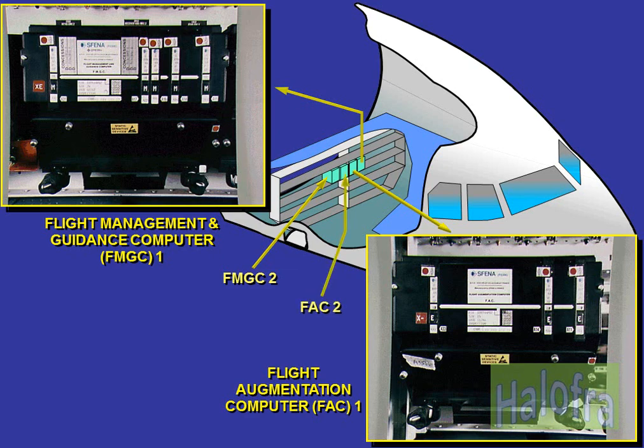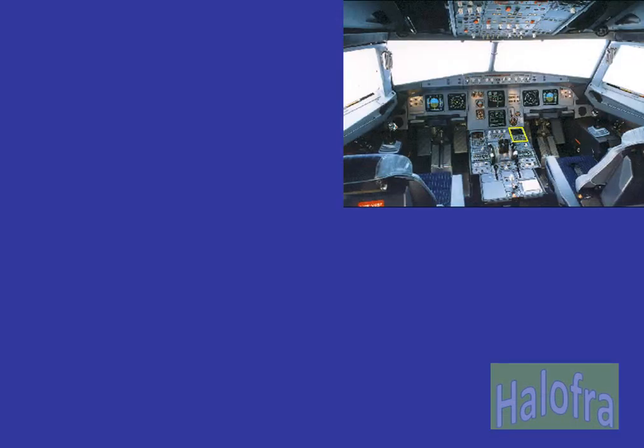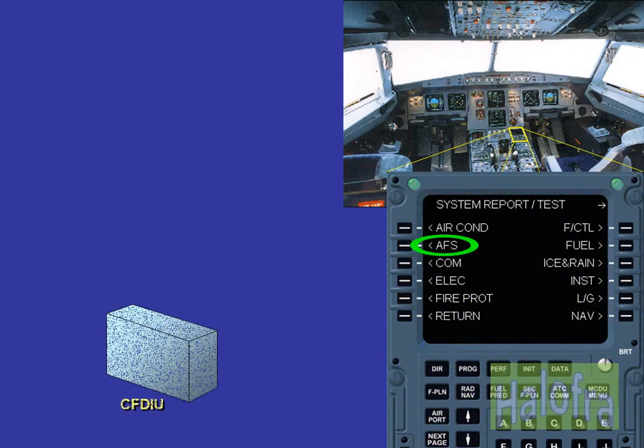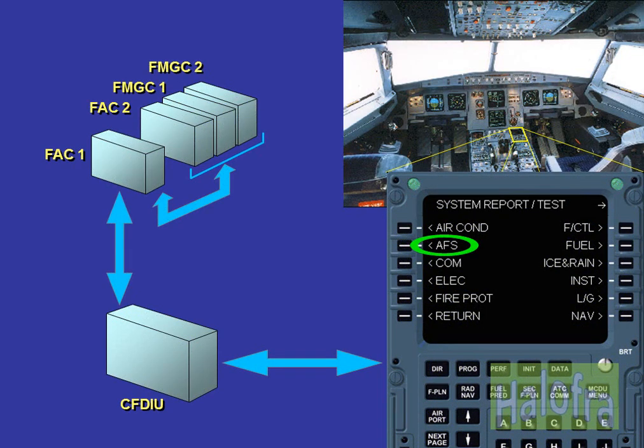The AFS computers are located in the aft avionics rack. Using the MCDU, you can have access to the CFDS fault messages of the AFS. The byte of each AFS computer can be interrogated via FAC 1, and AFS test and land test can be launched from the MCDUs.